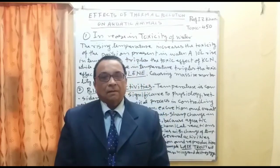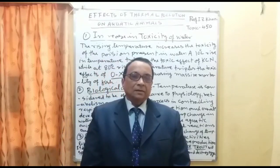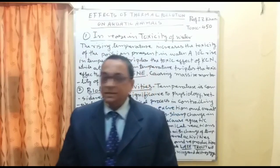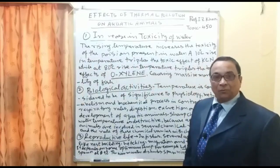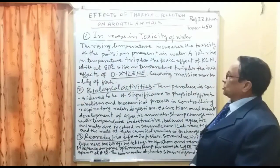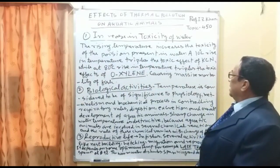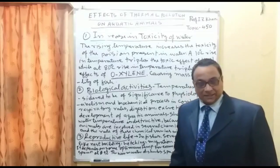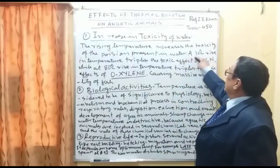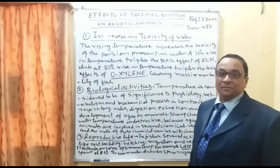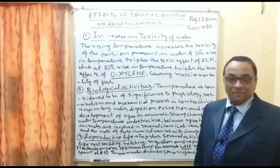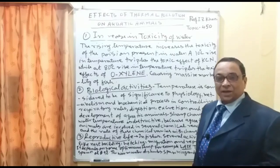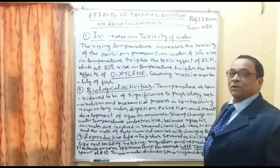Here is effect number one: increasing toxicity of water. Rising temperature increases the toxicity of poisons present in the water. A 10 degree centigrade rise in temperature triples the toxic effect of potassium cyanate (KCNO). Where potassium cyanate salts are present, their dissolution will be more and the water will become highly toxic.